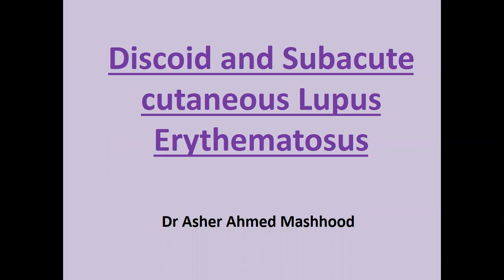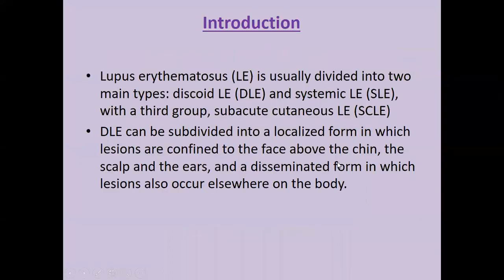The topic of today's lecture is Discoid Lupus Erythematosus and Subacute Cutaneous Lupus Erythematosus. Lupus erythematosus is usually divided into two main forms: the cutaneous form, called Discoid Lupus Erythematosus, and the systemic form, called Systemic Lupus Erythematosus. In between the two forms, there is another subform called Subacute Cutaneous Lupus Erythematosus, which has features of both the cutaneous and systemic disease.